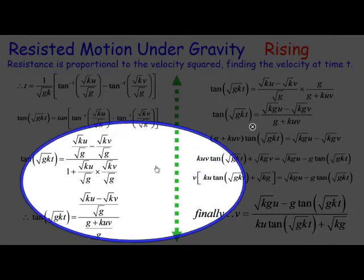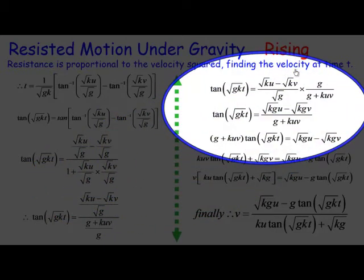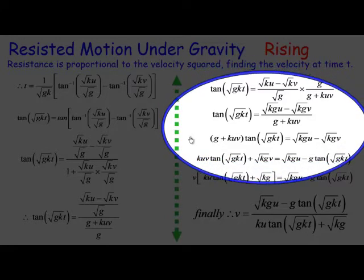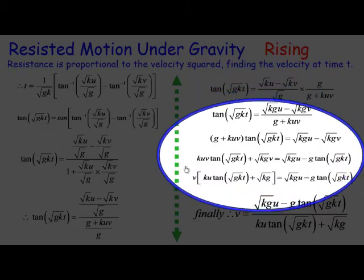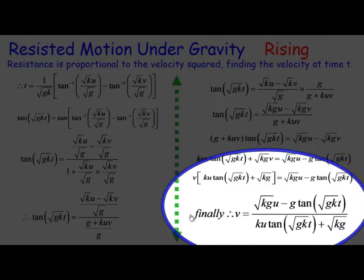When we're dividing fractions we invert and multiply, you get a bit more convoluted expression. We need to then try and extract out the v out of this. So we need to multiply by g plus k uv and then regroup, try and get the v out. You can see here it involves a fair bit of work. But eventually we get that the velocity v at any particular time t is root kg u minus g tan root gk t all over ku tan root gk t plus root kg.